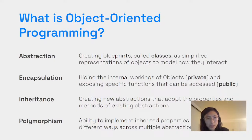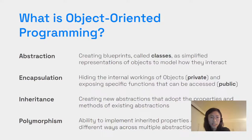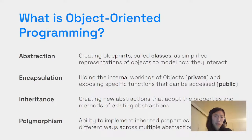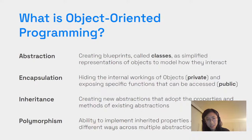Encapsulation means hiding how these classes or objects work on the inside and only exposing specific properties and functions accessible to your developer. Inheritance means you can create new abstractions that adopt the properties and methods of existing abstractions. Polymorphism means you can implement a bunch of different types of inheritances, and they can be implemented in different ways across multiple abstractions.